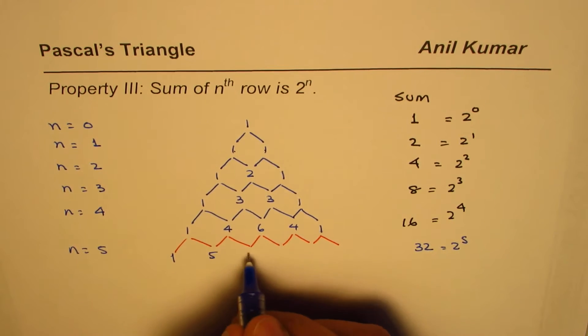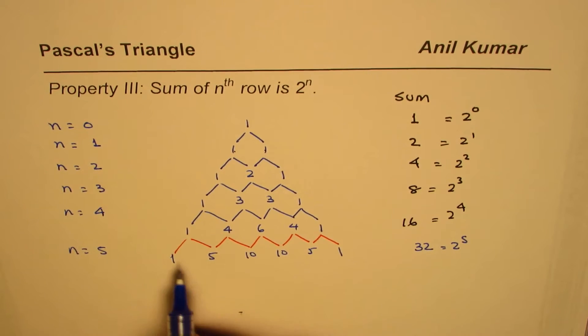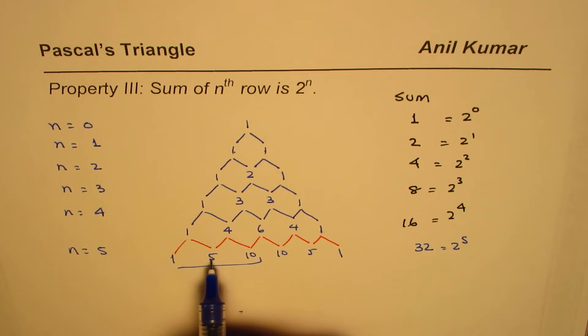So it is 1, 5, 10. From the symmetry, you can write down very fast. Add them up. So if you add these, 1 plus 5 is 6, 6, 10, 16. This is also 16, which gives you 32.